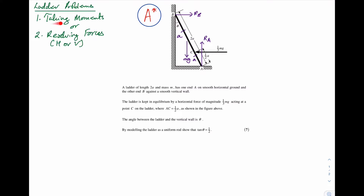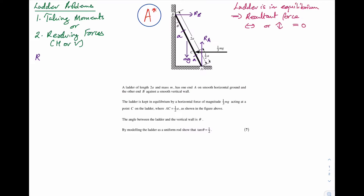Ladder problems are solved by taking moments or resolving forces horizontally or vertically. I'm going to start off by working out RB and RA. The ladder is in equilibrium, implying the resultant force horizontally or vertically is equal to zero. To find RB I need to resolve horizontally, taking right to be the positive direction. The resultant force horizontally is RB minus 1/3 mg, which has to equal zero. Therefore RB is equal to 1/3 mg.